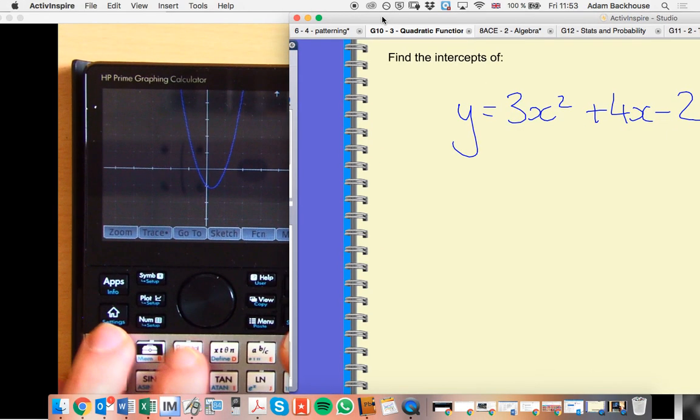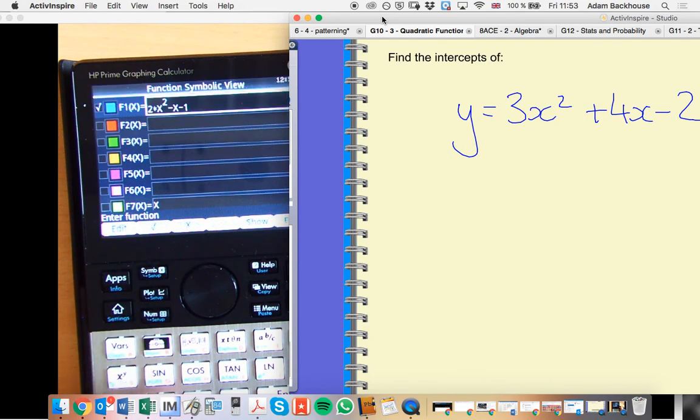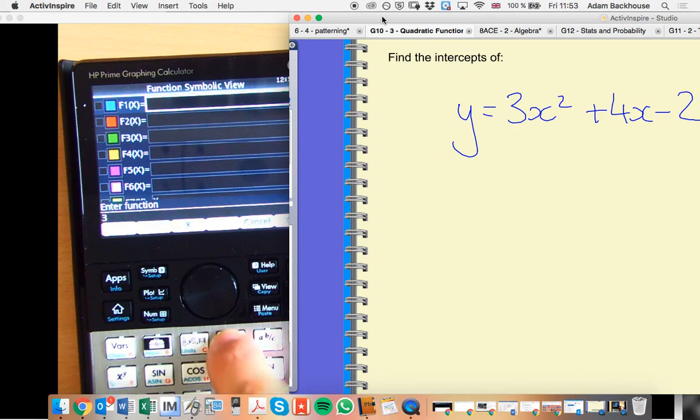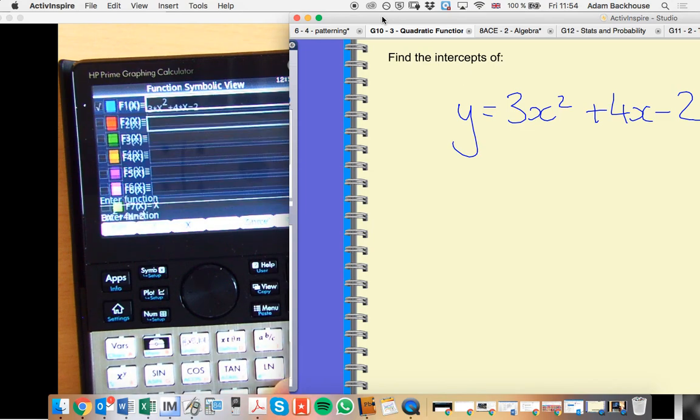So I'm going to go, I'm already actually in the function menu. I need to type the function in. So it's 3x² plus 4x minus 2. Enter.